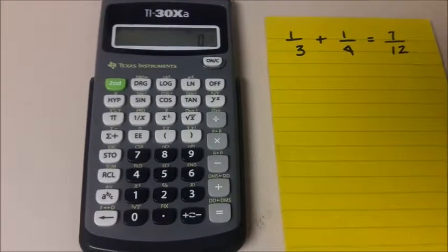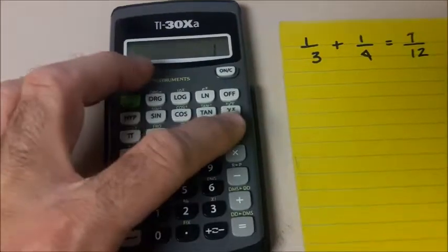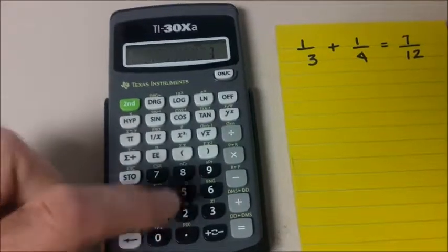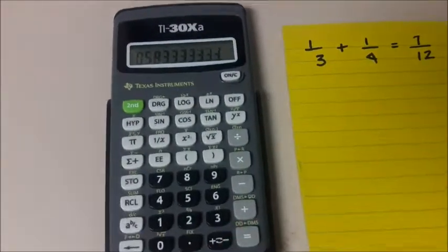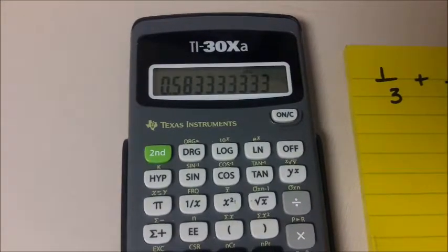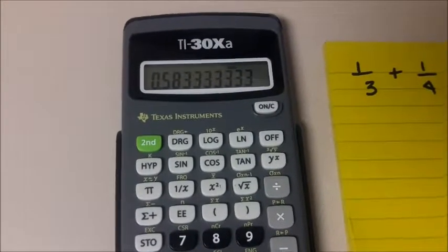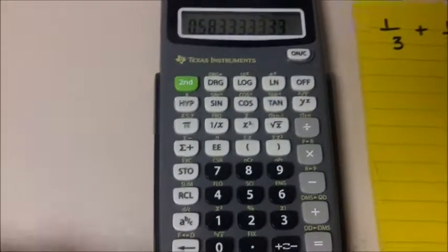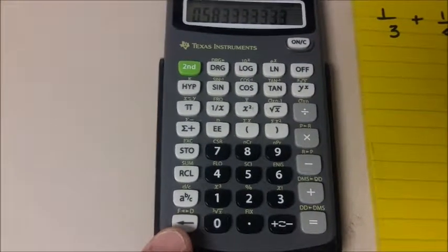When you do the math on that you get 7/12. So on the calculator you do 1 divided by 3 plus 1 divided by 4, and that gives you the decimal approximation number. So their issue is how do they know that that number right there is 7/12? Well on most scientific calculators there is going to be a fraction to decimal conversion or decimal to fraction conversion.